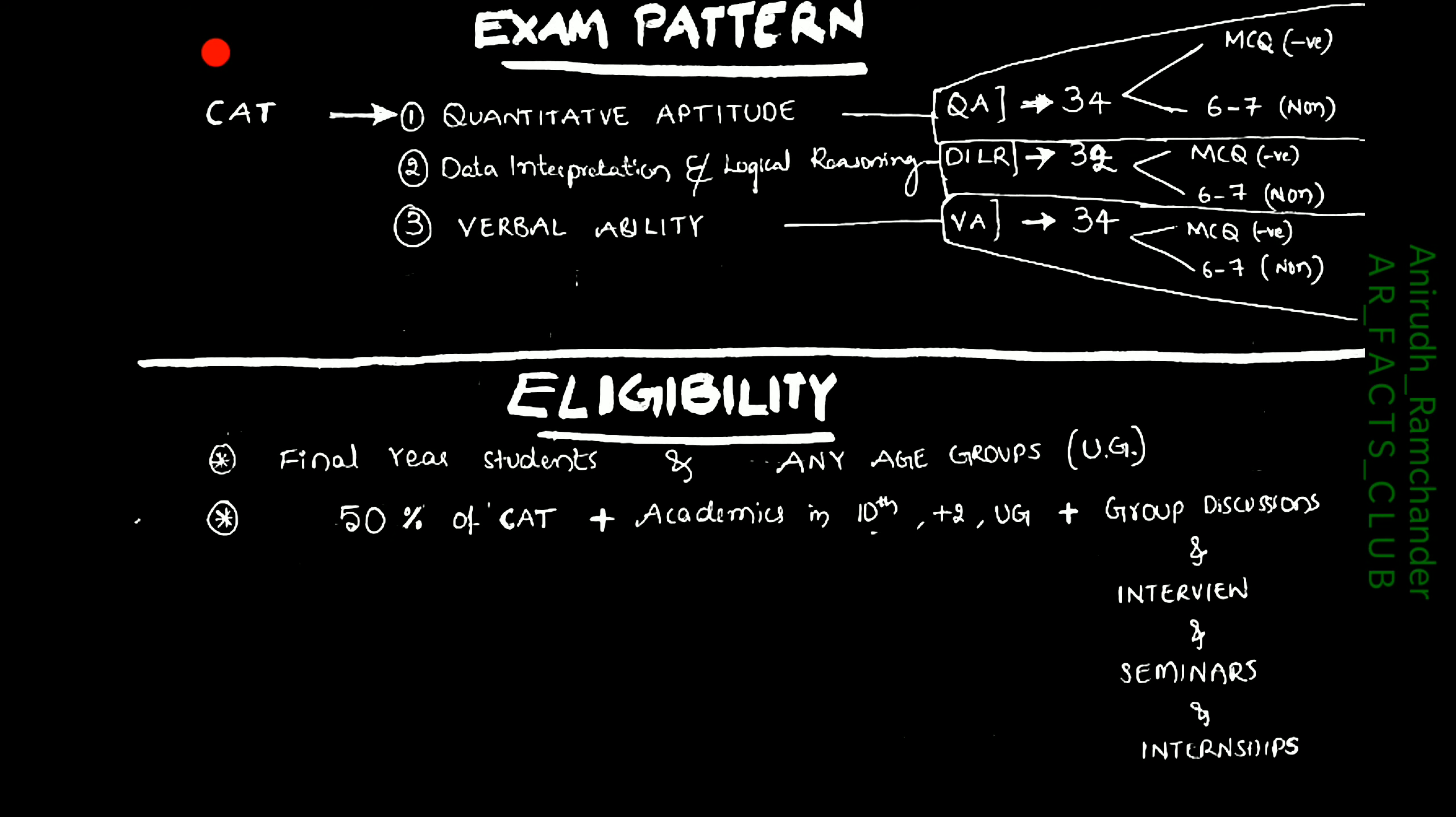Coming to exam patterns, CAT has three categories: Quantitative Aptitude, Data Interpretation and Logical Reasoning, and Verbal Ability. Quantitative Aptitude has 34 questions, DILR has 32 questions, Verbal Ability has 34 questions. Out of which, MCQs have negative marks and 67 are non-MCQs like fill in the blanks in each sector. MCQs have 3 marks for one correct answer and minus 1 for each wrong answer, while non-MCQs have no negative marks.